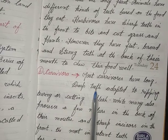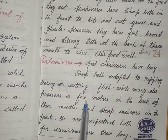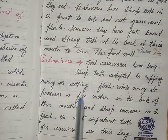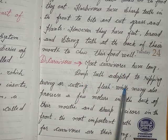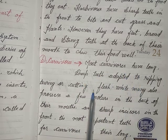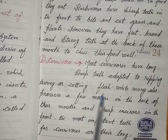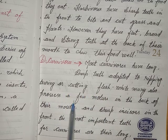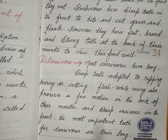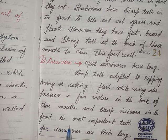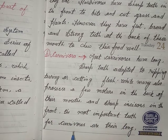The carnivores — most carnivores have long, sharp teeth adapted to ripping, tearing, or cutting flesh, while many also possess a few molars at the back of their mouth and sharp incisors at the front. The most important teeth for carnivores are their long, sharp canine teeth.